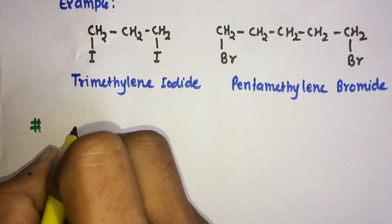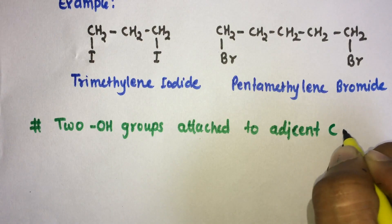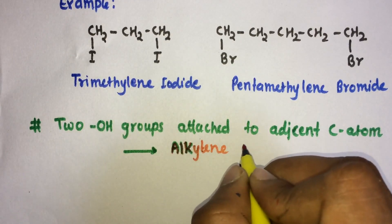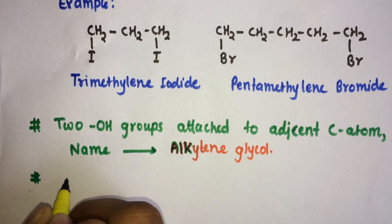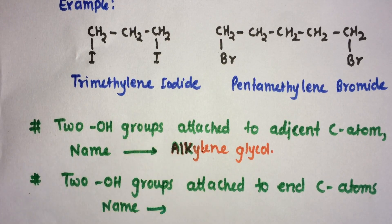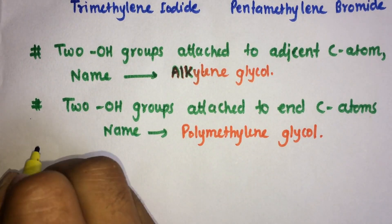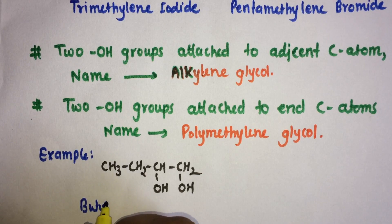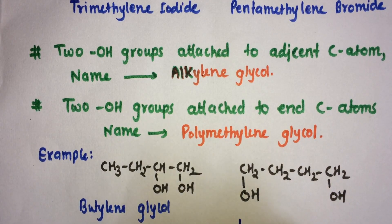Likewise, if two OH groups are attached to adjacent carbon atoms, it is named as polymethylene glycol. If two OH groups are attached to end carbon atoms, it is also named as polymethylene glycol. For example, butylene glycol, butamethylene glycol, or tetramethylene glycol.